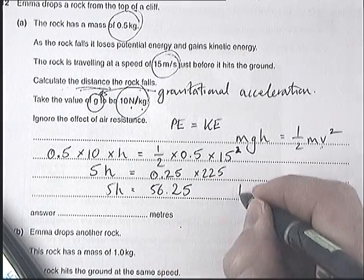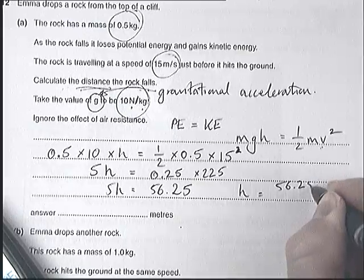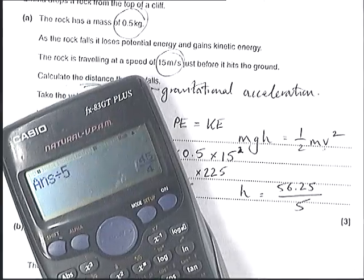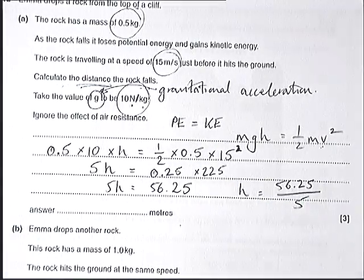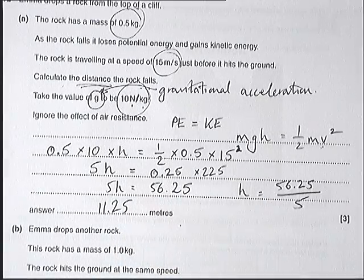So h equals 56.25 divided by 5, which is 11.25 metres. Really not that difficult.